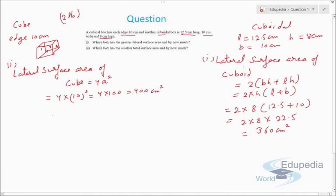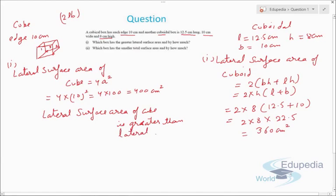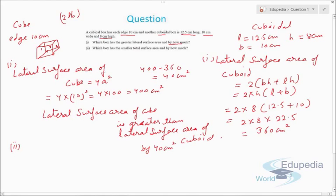Comparing both, the lateral surface area of the cube (400 cm²) is greater than the lateral surface area of the cuboid (360 cm²). To find by how much, we subtract: 400 − 360 = 40 cm². So the lateral surface area of the cube is greater than that of the cuboid by 40 cm².